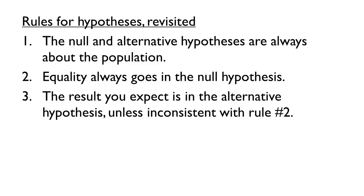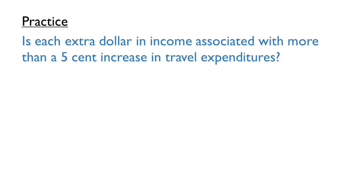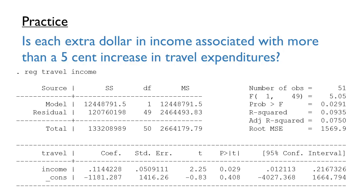Now take a moment to try the entire process of hypothesis testing with a new question. Suppose a travel agency would like a better understanding of their potential for growth. They ask: is each extra dollar in income associated with more than a 5 cent increase in travel expenditures? Using this question and the relevant parts of the regression results, take a moment to write the null and alternative hypotheses, test statistic, degrees of freedom, critical value, and conclusion. Use a 5% significance level. You may wish to pause the video to work through this problem.